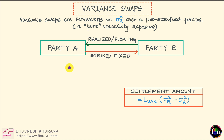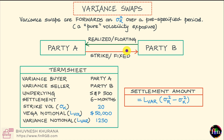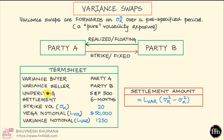Let's take a look at how the term sheet of this variance swap will look and how the variance entries will be arrived at. I'll be the variance buyer — party A — and party B will be the variance seller. Since my equities portfolio was a very broad-based equities portfolio, I have chosen the underlying to be the S&P 500.